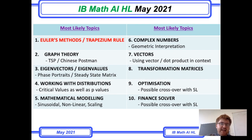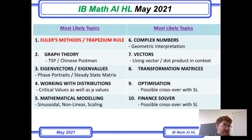Number seven is vectors. Know how to work out a vector and dot product, and know what they tell you about two vectors. But I think they're going to go down the line of a practical question — perhaps a shortest distance kind of question between two vector equations.